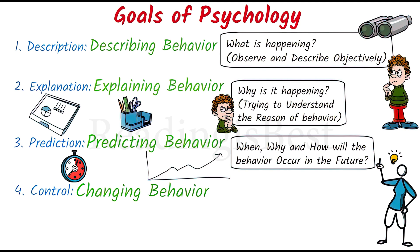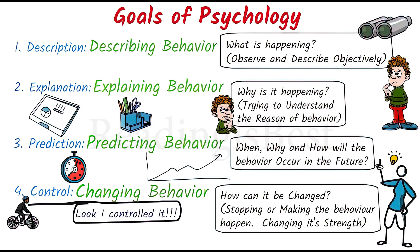The fourth goal of psychology is control. Here the question of how can it be changed is answered. In this fourth goal we deal with controlling the behavior — making it happen or stopping it, starting the behavior or influencing its quality and strength.